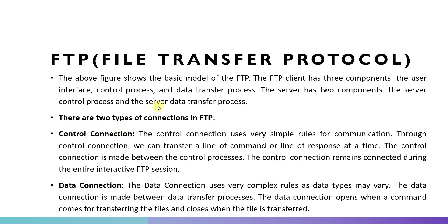There are two types of connections in FTP. The first one is the control connection. The control connection uses very simple rules for communication. Through the control connection we can transfer a line of command or a line of response at a time. The control connection is made between the control processes and is used to control the data transfer.